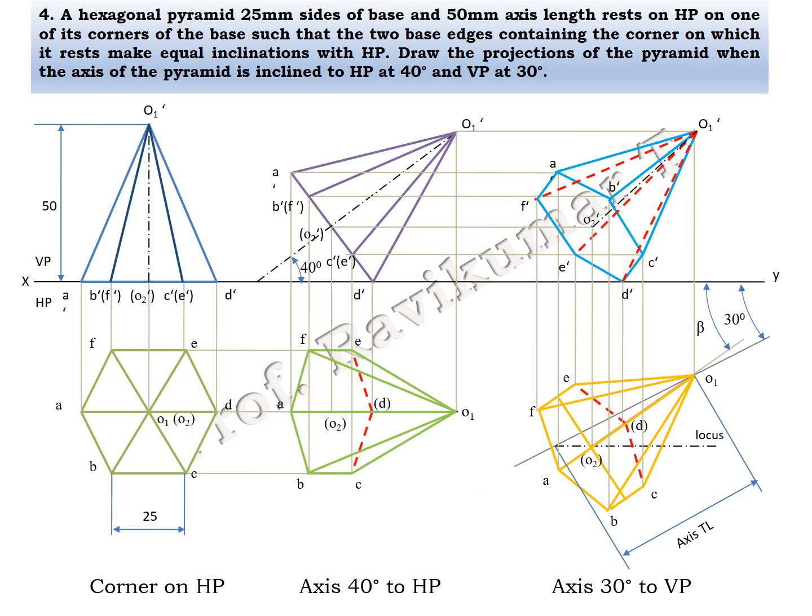The key rule in hexagonal pyramid problems: if the axis is inclined to both planes — inclined to HP and inclined to VP — it is a locus problem, whether edge condition or corner condition. If the word 'appear' is present in the problem, it is a without-locus problem. Most importantly: if the edge of the base is inclined to VP, you must place the edge, not the axis. If you place the axis instead of the edge, the third position will be completely wrong.